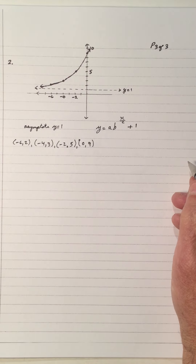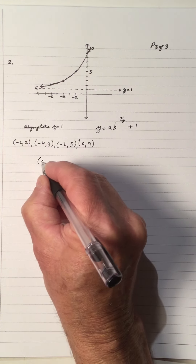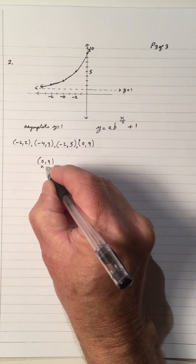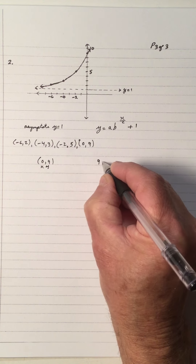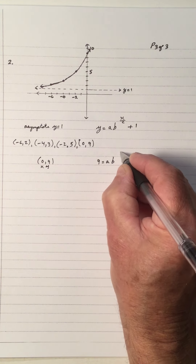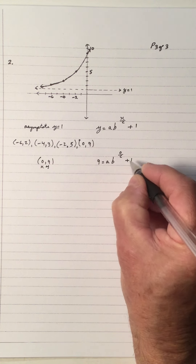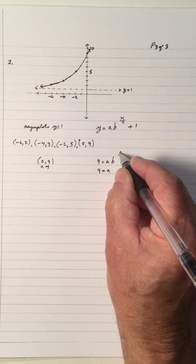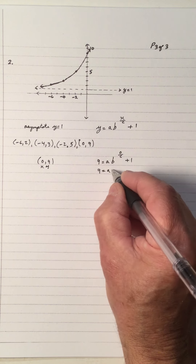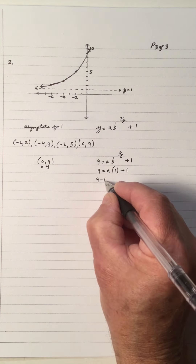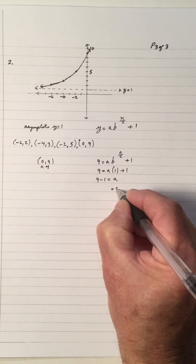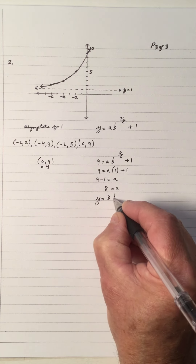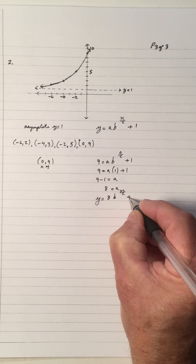Looking at the ordered pairs, I see the point zero, nine. Substituting x equals zero and y equals nine into the equation: nine equals a times b to the zero over c, plus one. Zero over c is zero, and b to the zero is one. So nine minus one equals a, meaning a becomes eight. The equation is now y equals eight times b to the x over c, plus one.